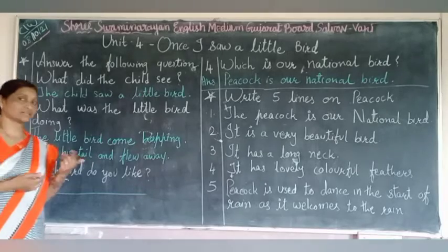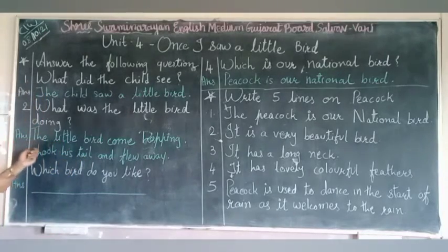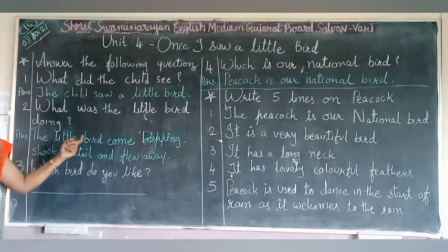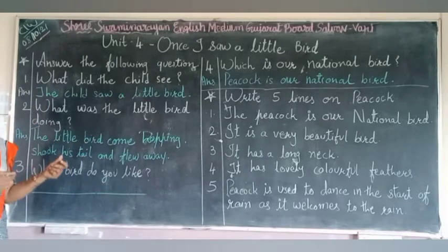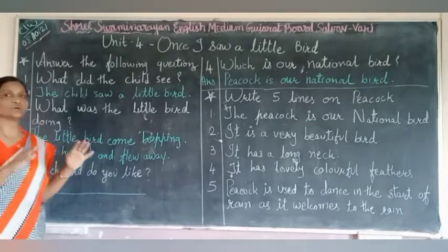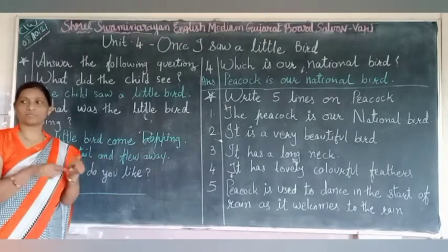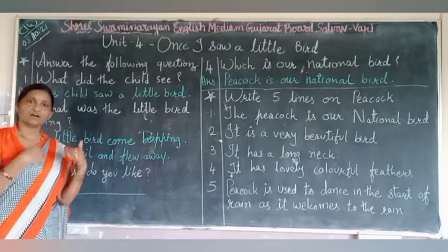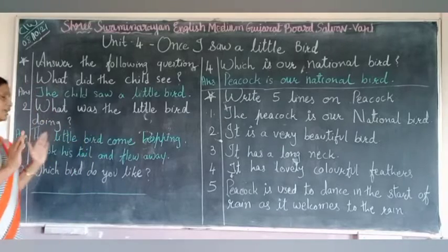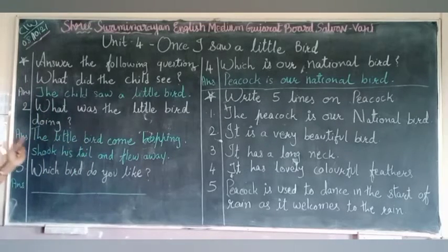What was the little bird doing? Ho bird uske paas aakat kya karda tha? A little bird came hopping, shook his tail and flew away. Ho kudata tha, apne pooch ko milata tha, aur hawa se ura jaata tha.